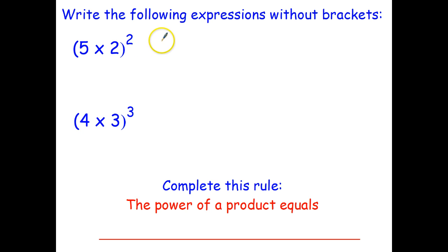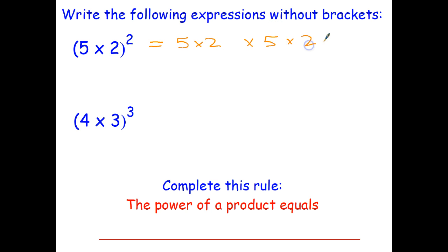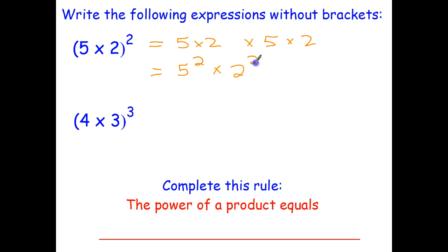The best way to do this is to start by saying five times two all squared just means five times two times five times two. When I'm multiplying, I can multiply in any order, so five times five is five squared, and two times two is two squared. So five times two in brackets, all to the power of two, is the same as five squared times two squared.